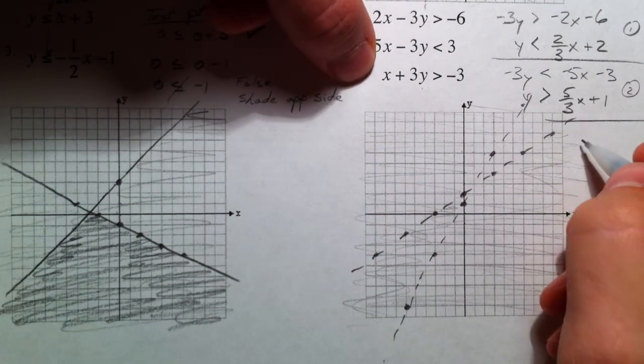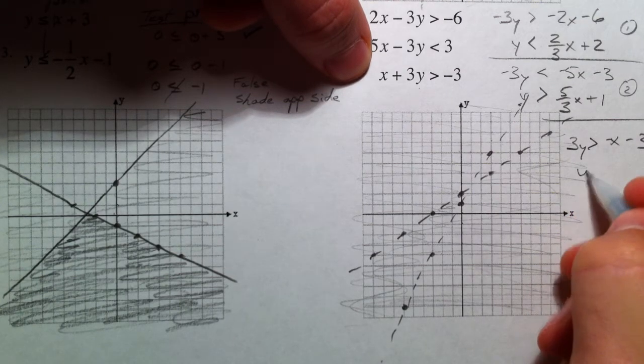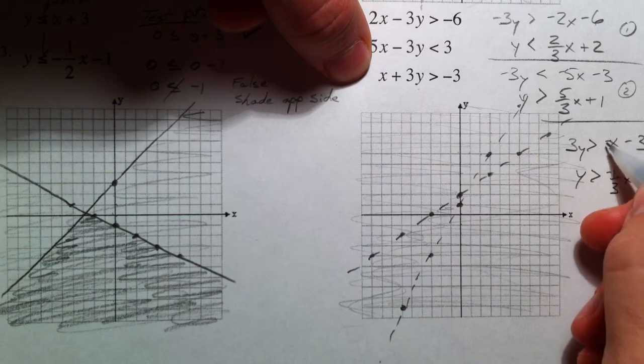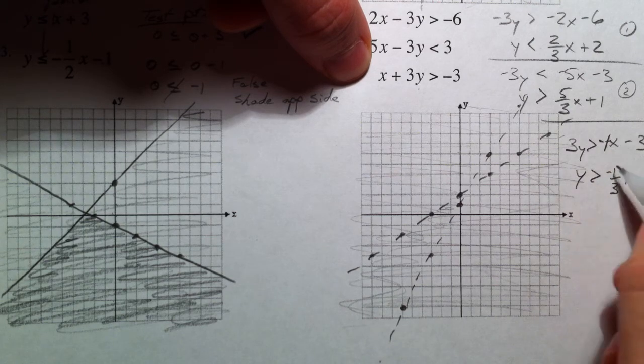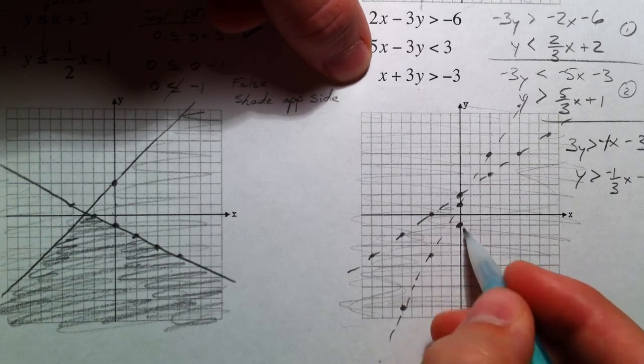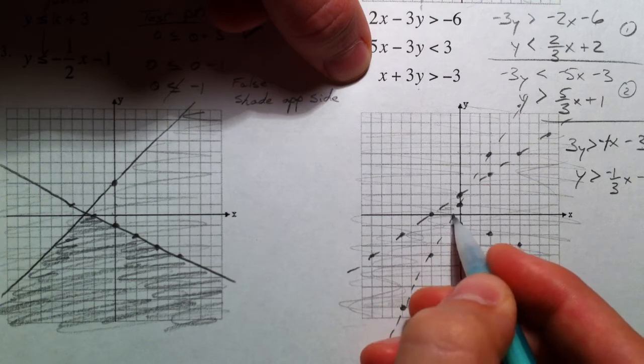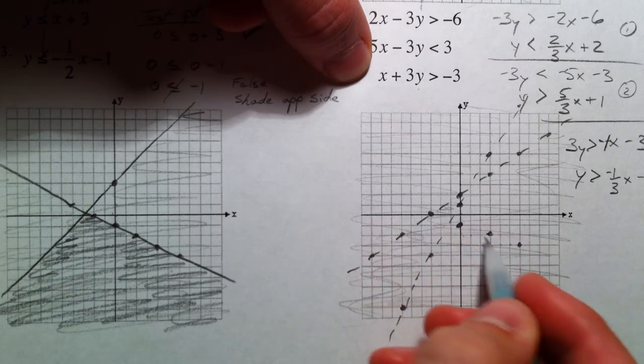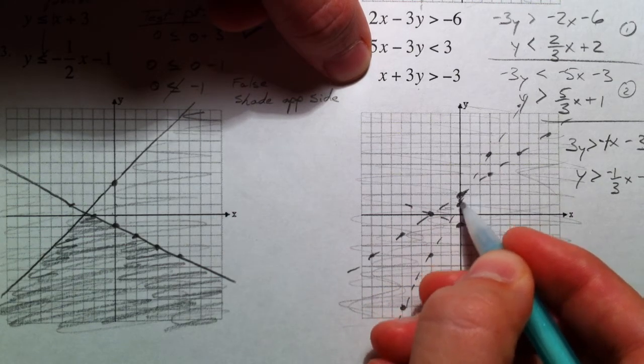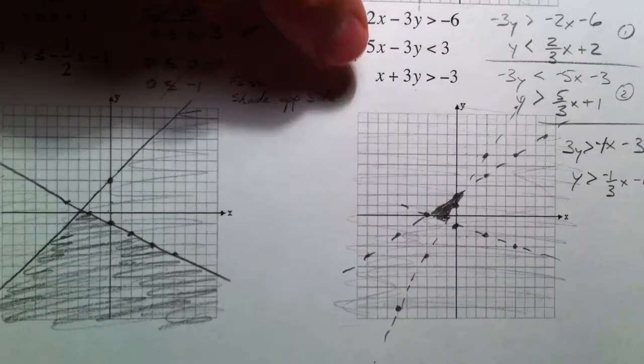And then, finally, that was the second one. 3y is greater than negative x minus 3. So, y is greater than a negative 1 third x. If you divide by 3, this is negative 1 divided by 3. And negative 3 divided by 3 is a negative 1. So, that's negative 1. And the slope is 1 third. So, 1, and 1, 2, 3. So, y is greater than that. And so, we're going to shade the overlapping of all of that. And so, that's our solution set.